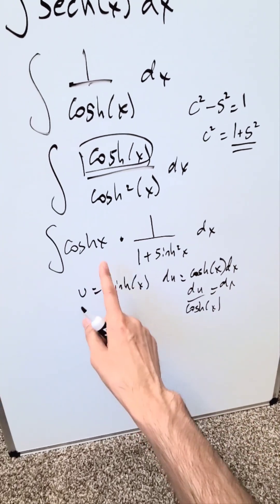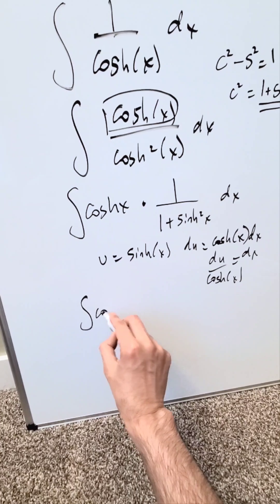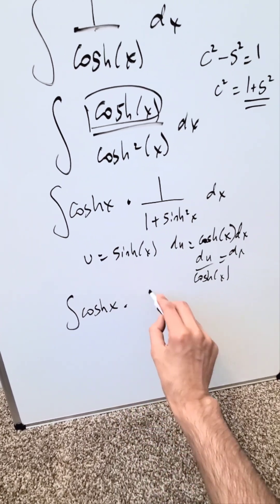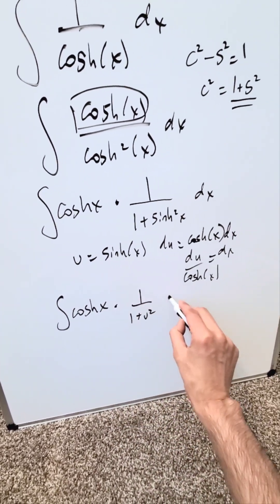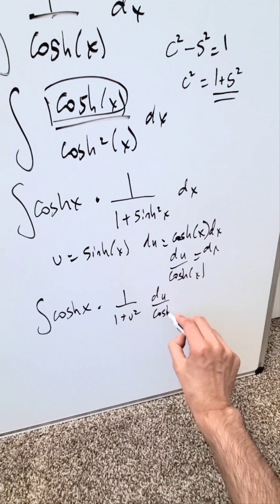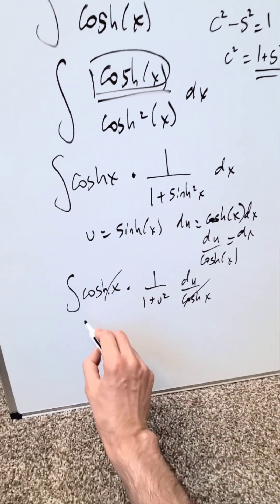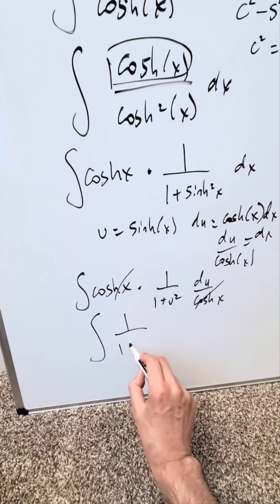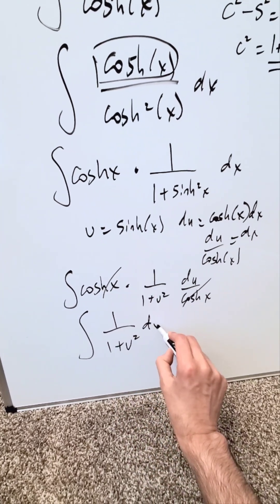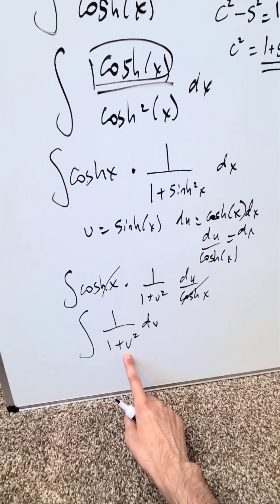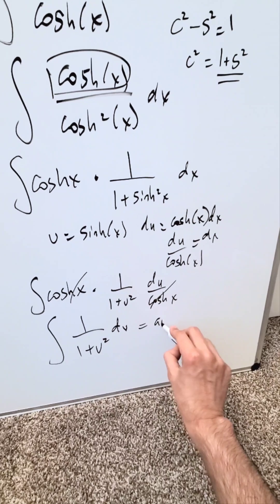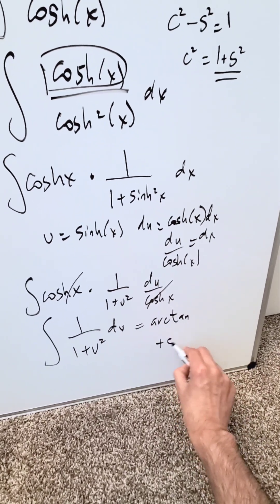You're bringing in these substitutions and look what will happen. I have my hyperbolic cosine x, then I have 1 over 1 plus u squared, then I have du over hyperbolic cosine x which will cancel out. The only thing which remains is an integrand which will give me arctan, and 1 over 1 plus u squared always brings out arctan. I have here arctan u plus C.